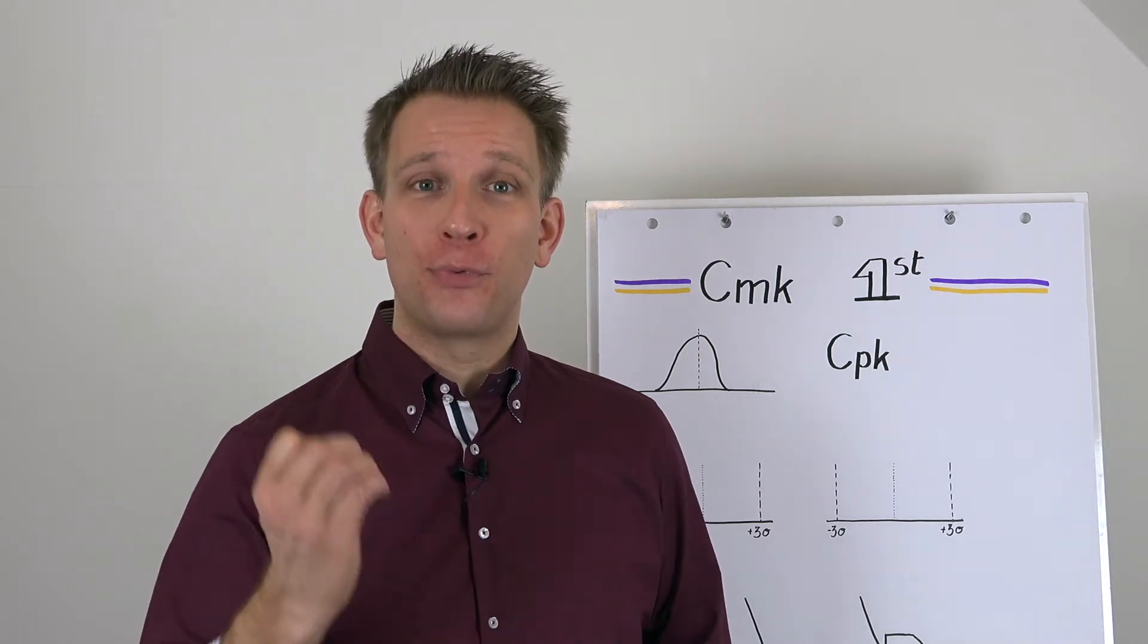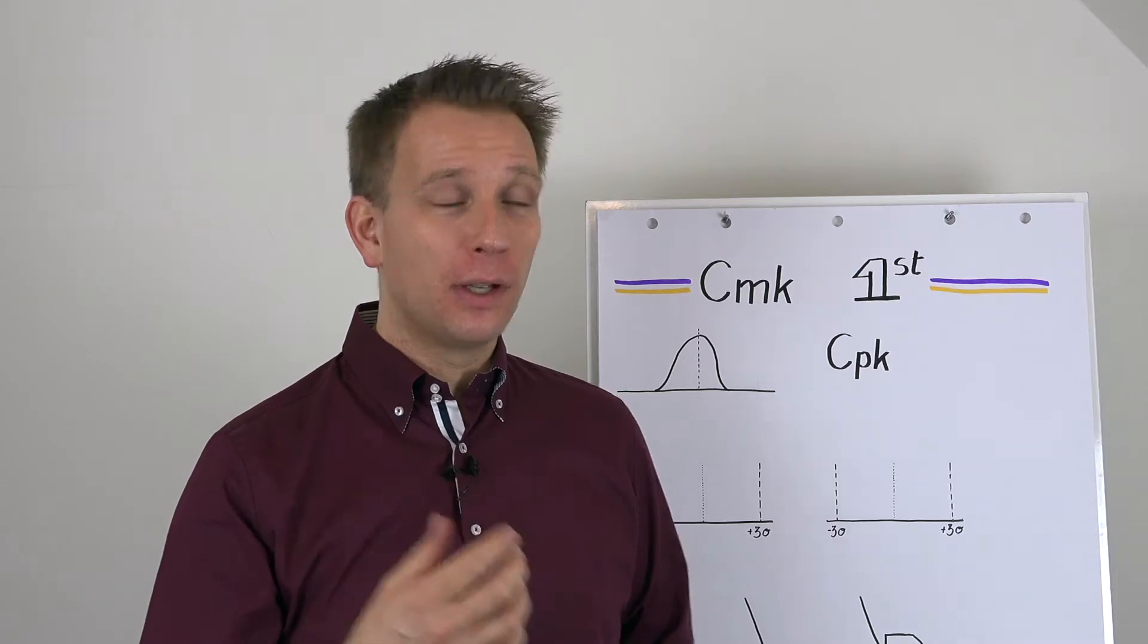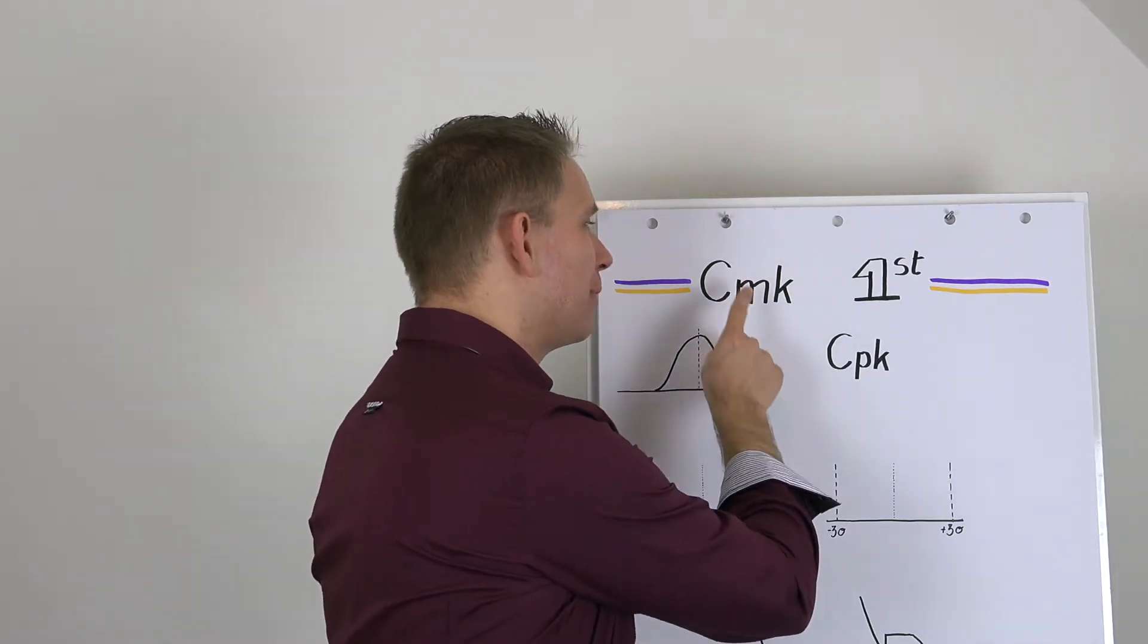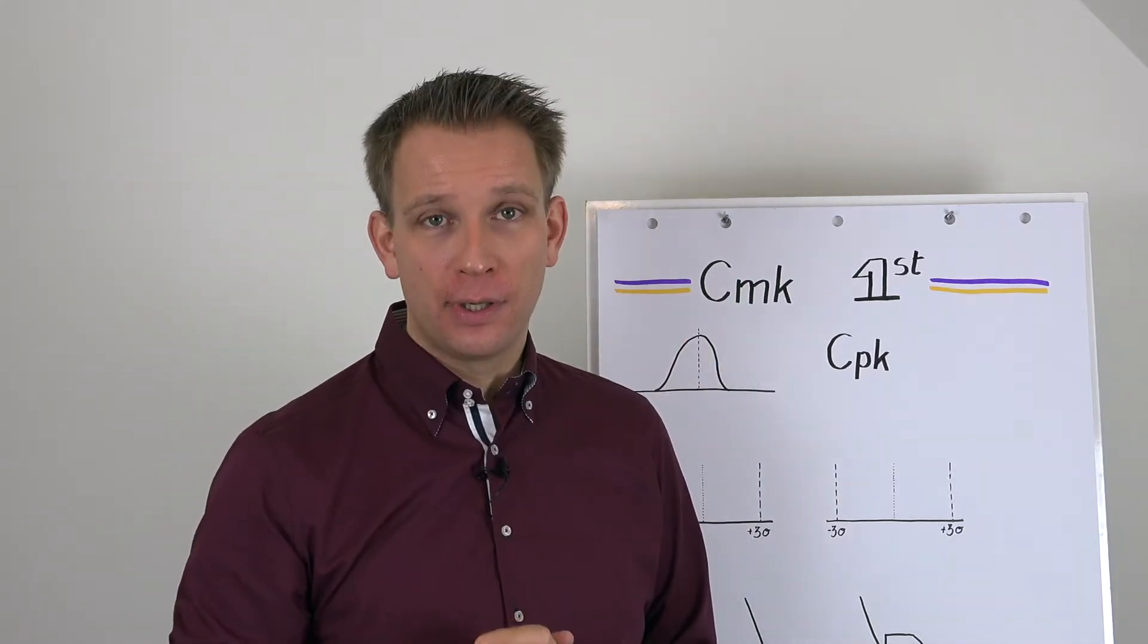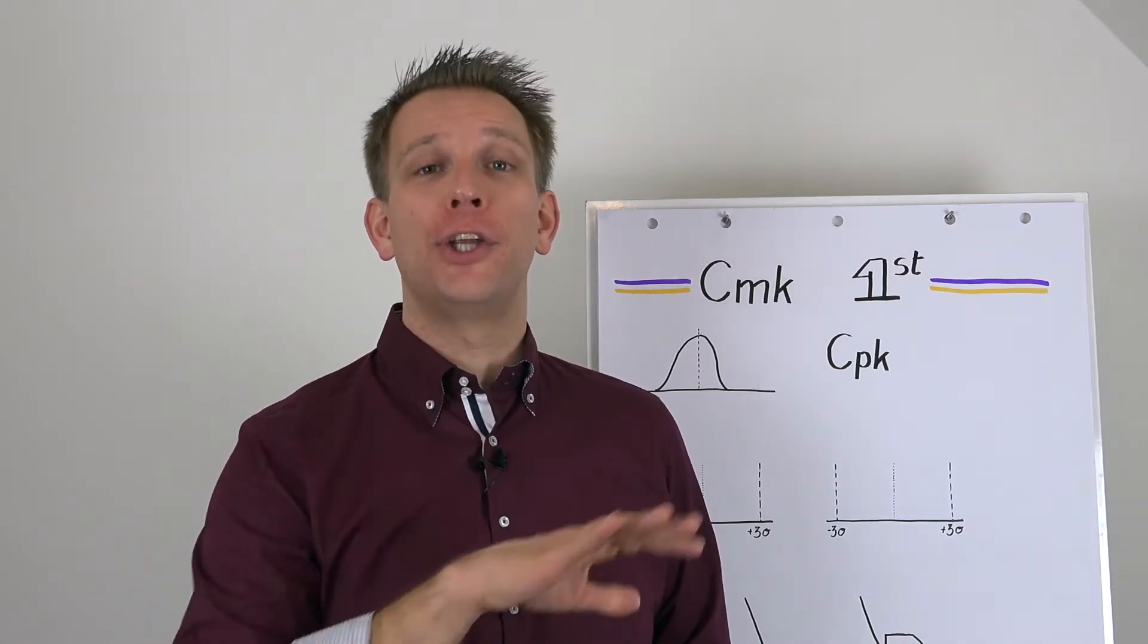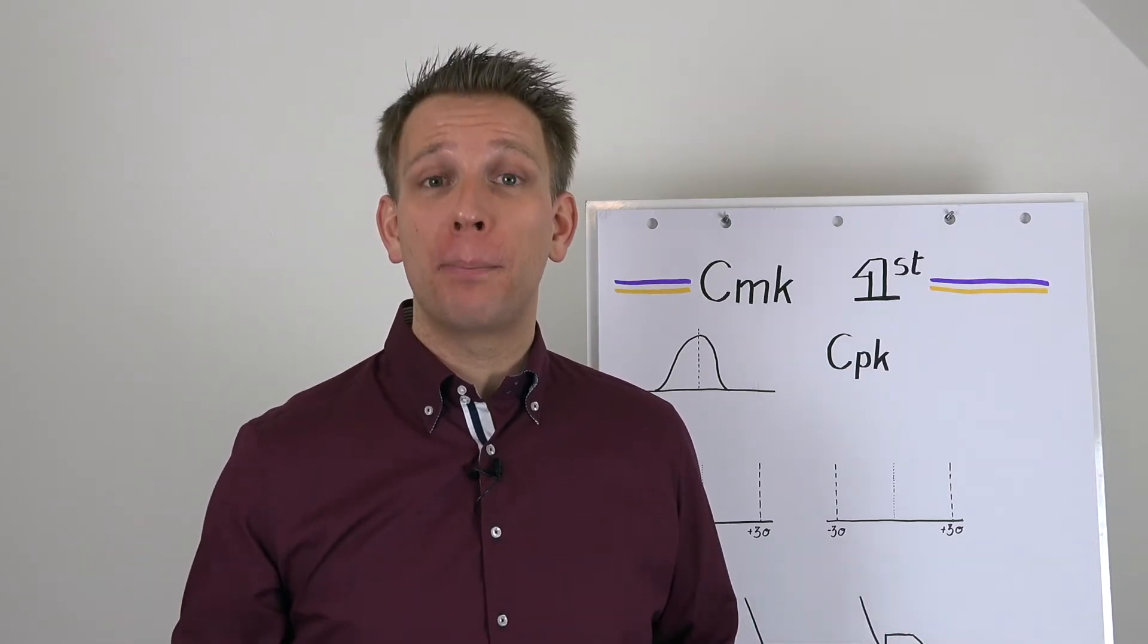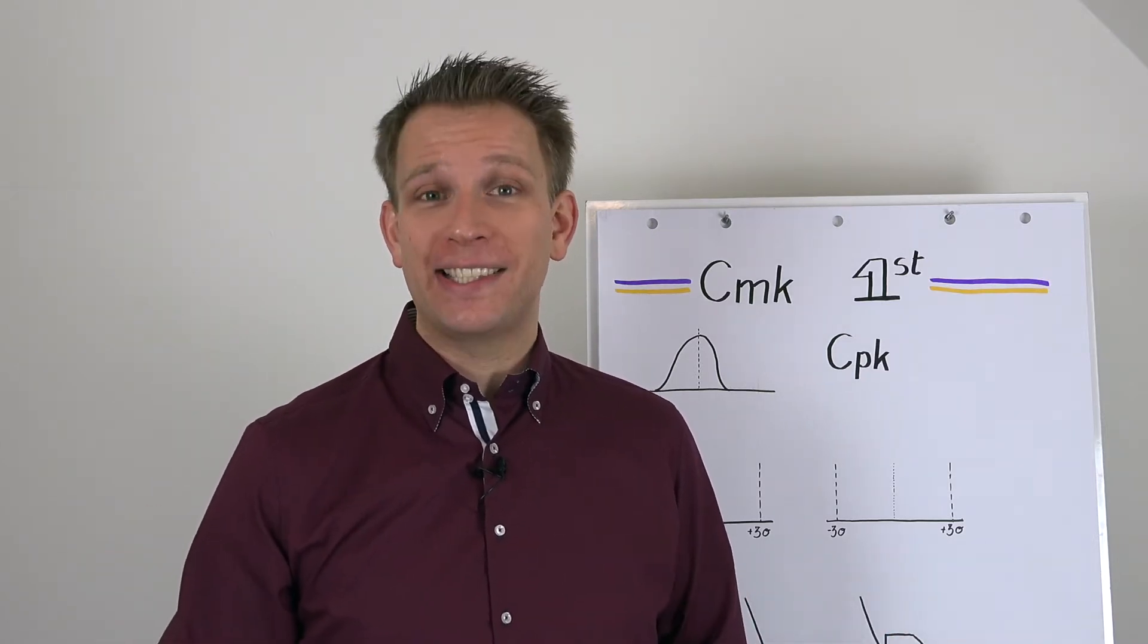When you are tasked with improving that machine performance and getting to a Six Sigma level, always check your machine capability first. Because if you cannot get your CMK up to a good level, you have no chance of getting your CPKs or your PPKs up to any level or ever reaching that Six Sigma.